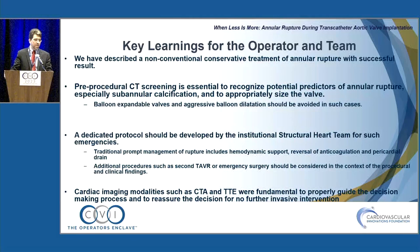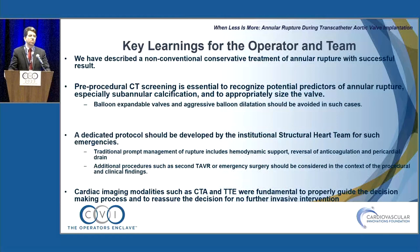Key learning: always be prepared for the worst. In this case, the first thing we did was activate the OR. We confirmed no coronary obstruction. Usually annular rupture requires emergency surgery, but we were able to manage it clinically based on echo and CT results and previous experience. It's of utmost importance to check what's happening with the valve, which device should be chosen, and what to do in case of these devastating events.